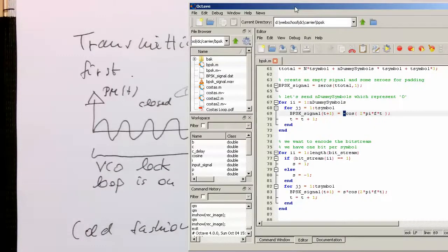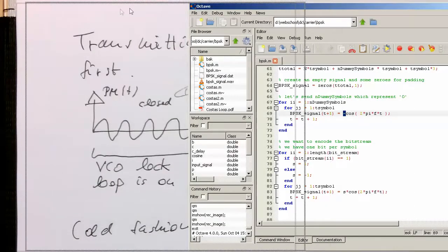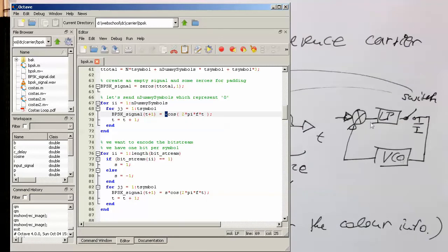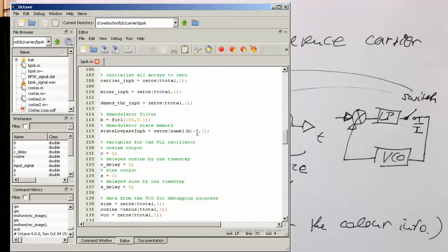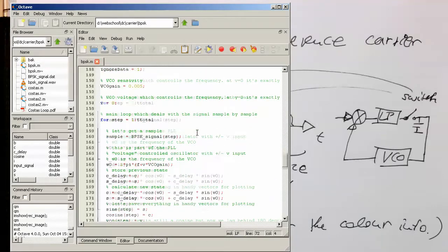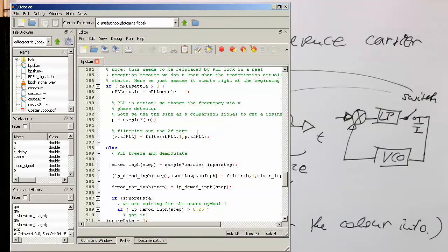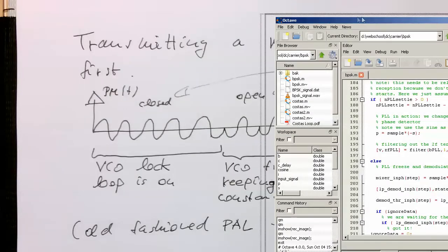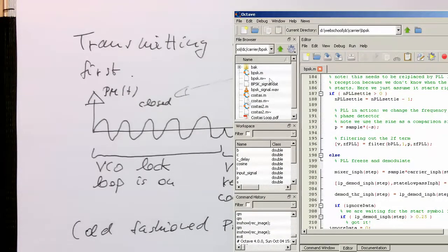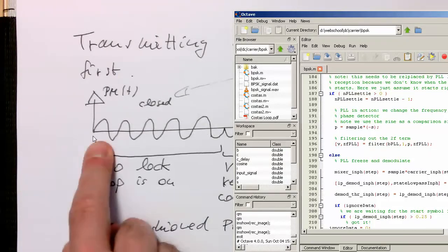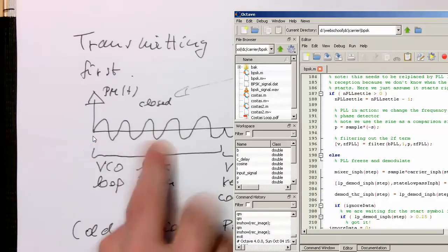And so therefore, let's have a look here. If I go back here, so now let's have a look here at the switch. So here. So while these dummy symbols are transmitted, so in this period here, from here to here. So from here, my finger here, from here to here in this period.